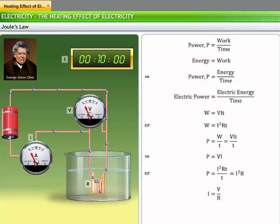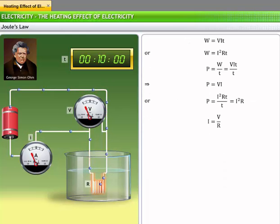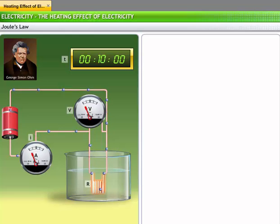Substituting V by R for I in the expression P is equal to I square R and simplifying, we get electric power equals V square by R. The SI unit of electric power is watt and is denoted by W. One watt is the power consumed by a conductor having a potential difference of one volt across its ends when the current passing through it is one ampere.